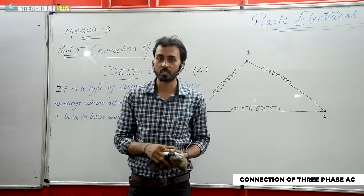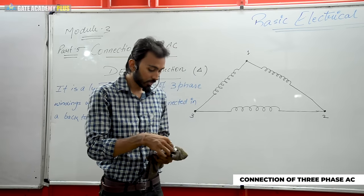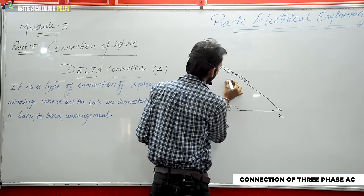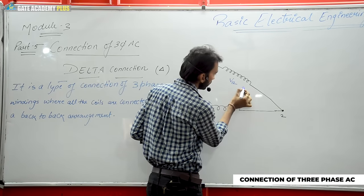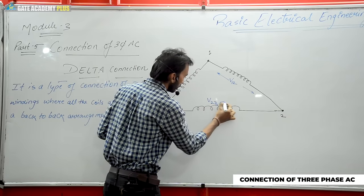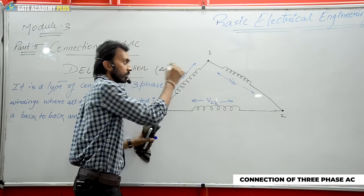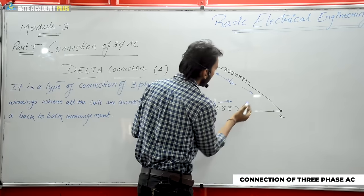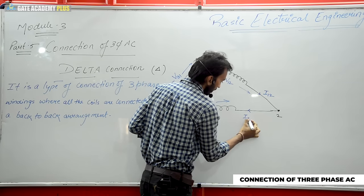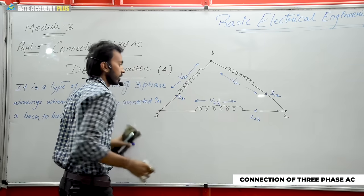Just like in the star connection video, we expressed line and phase quantities — in the same form we can express delta. The phase voltages are V12, V23, and the phase currents, if I talk about one to two points: I12 is the phase current, the next phase current is I23, and from three to one, I31. So I have expressed three phase currents. All these are the phase quantities.